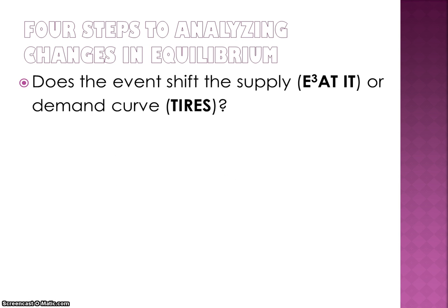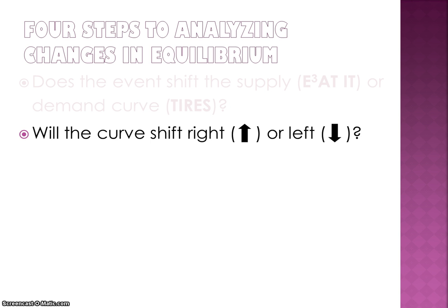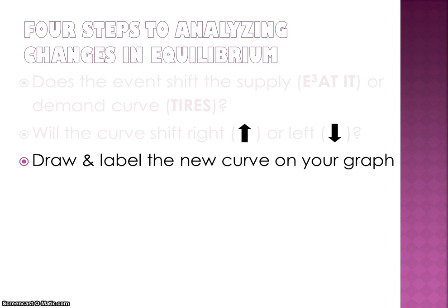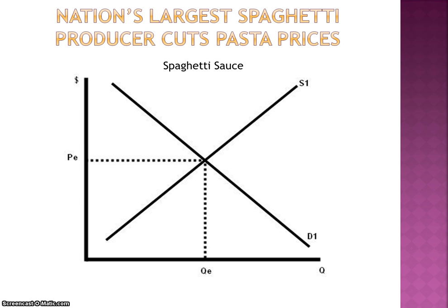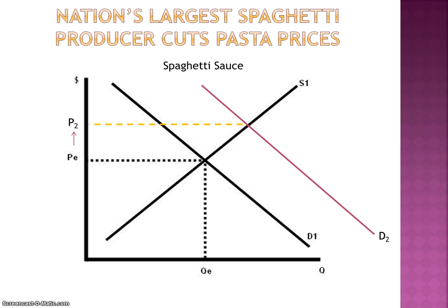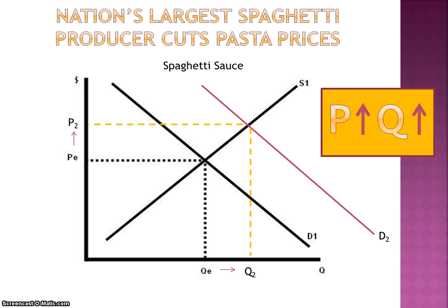So just a couple of practice problems. First we have to figure out if the event causes a shift in the supply curve or the demand curve, figure out which way that curve is going to shift, draw it out on a graph, identify the new equilibrium, and then compare where the equilibrium has moved. For example, if the nation's largest spaghetti producer cuts pasta prices, that's going to cause an increase in the demand for spaghetti sauce because spaghetti and spaghetti sauce are complementary goods. So demand for spaghetti sauce will increase, causing equilibrium price and quantity of spaghetti sauce to rise. This is a related markets example.